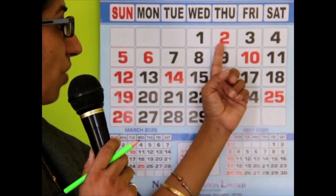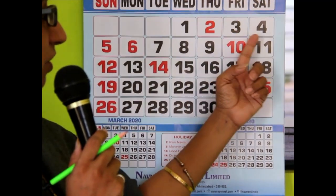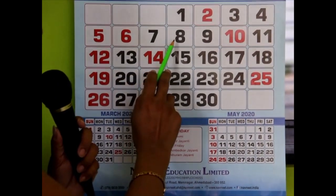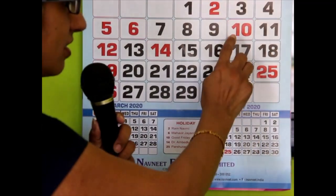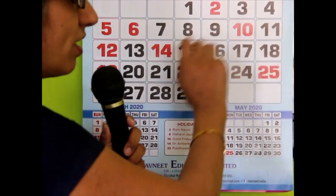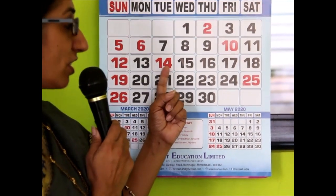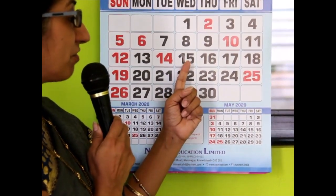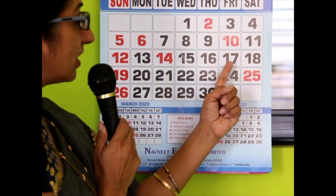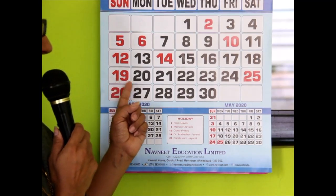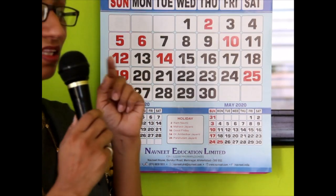We will start with number 1. So you can say that the number is 1, then 2, 3, 4, 5, 6, 7, 8, 9, 10, 11, 12, 13, 14, 15, 16, 17, 18, 19, 20. If you focus your attention, when I say numbers from 13 to 19, the 'teen' comes at the last.